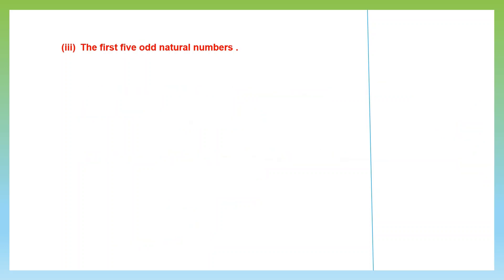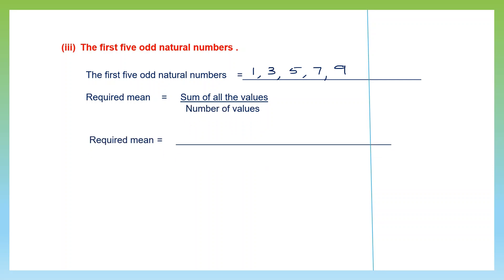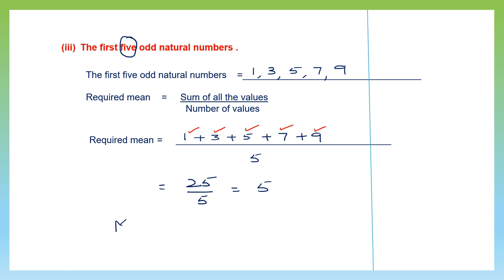Question 3: Find the mean of the first 5 odd natural numbers — 1, 3, 5, 7 and 9. Required mean is sum divided by 5. Adding up: 1 plus 3 is 4, plus 5 is 9, plus 7 is 16, plus 9 is 25. So here we have 25 by 5. 5 fives are 25. The mean is 5.